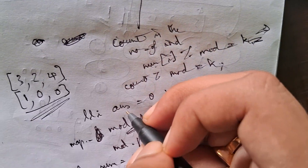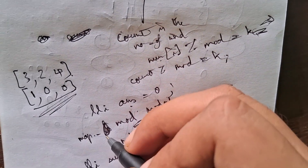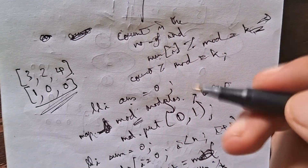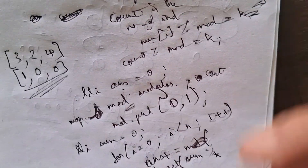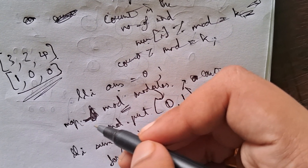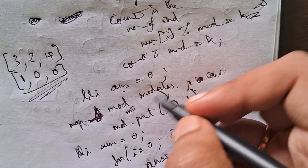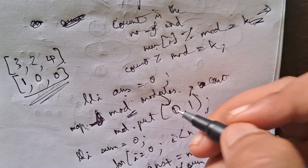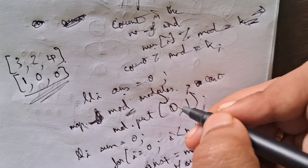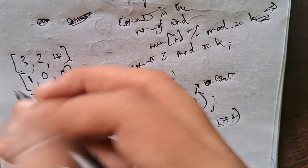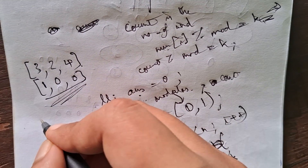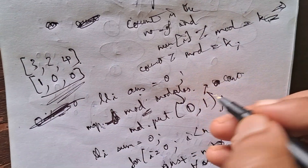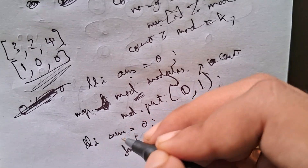We define a variable answer as a long long int, and we use a map to avoid memory limit exceeded errors. We create a map called mod_map that stores modulo values. Initially we put in {0: 1}, because if we consider no elements, the cumulative sum is 0, and 0 mod any number is 0, so we initialize count of 0 as 1.